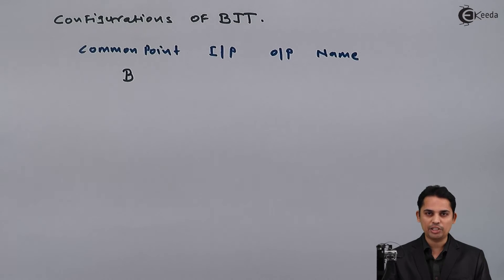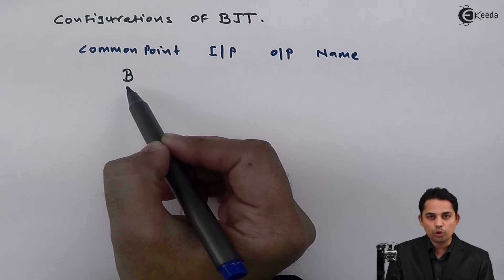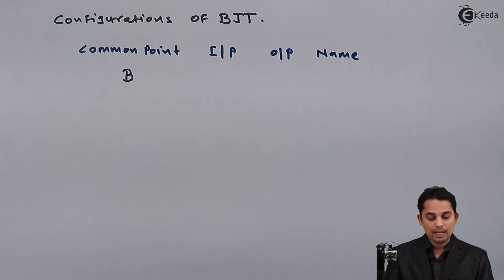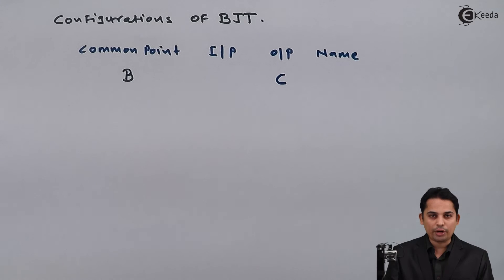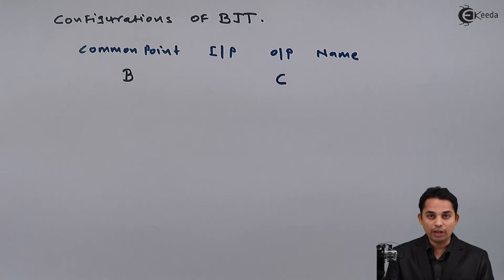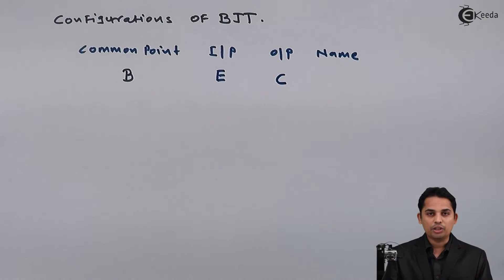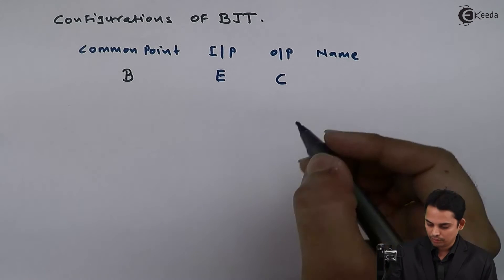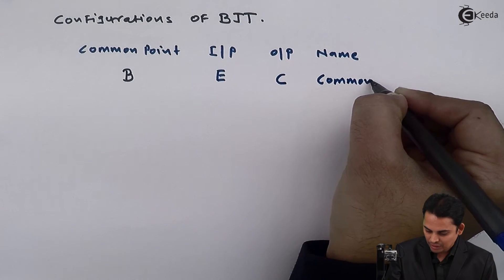Remember that base is by nature an input and collector is by nature an output. So in common base configuration, base is already utilized as the common point. Therefore, collector is assigned as the output and the remaining terminal, emitter, becomes the input. This configuration is called common base configuration.